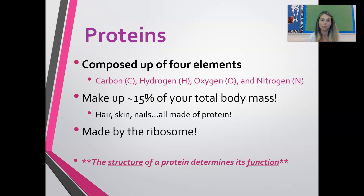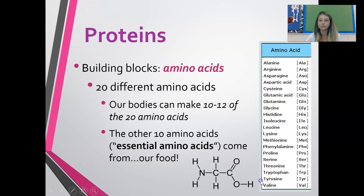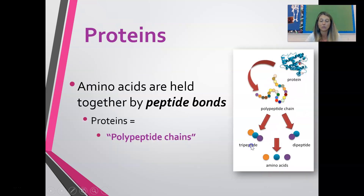Proteins are made by the ribosome, and the structure of a protein determines its function — that's really important when we talk about enzymes, which are a type of protein. The building blocks of proteins are amino acids. There are 20 different types of amino acids; your body can make around 10 to 12 of them, and the other roughly 10 come from your diet. Those are called your essential amino acids — you have to get them from food because you still need them to make the proteins your body requires.